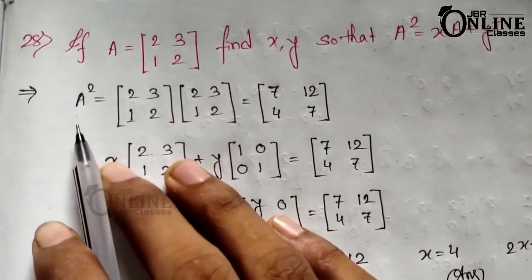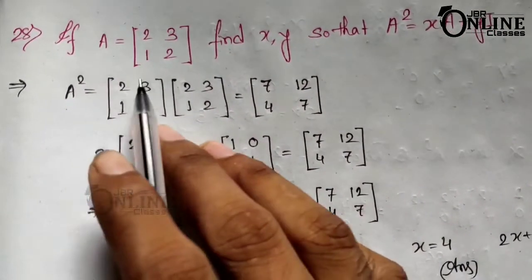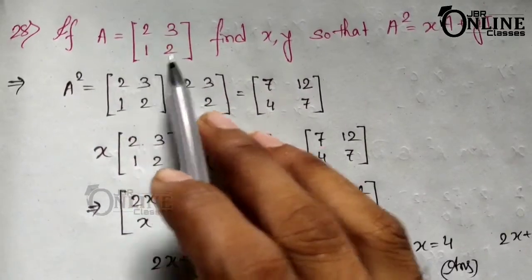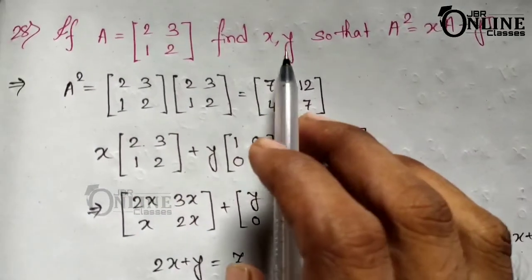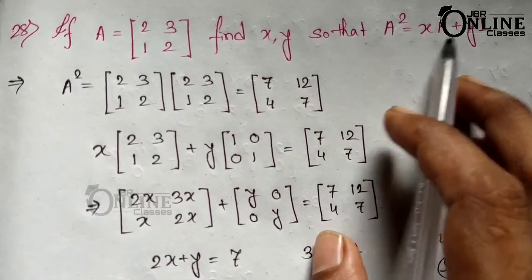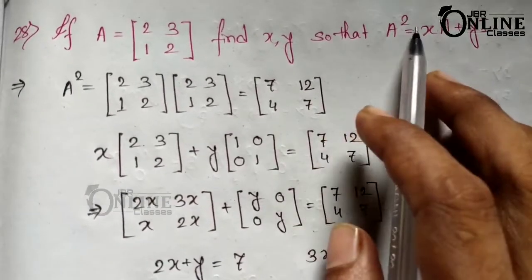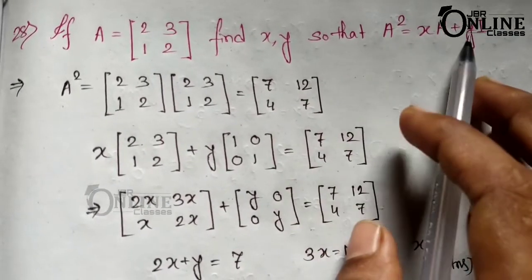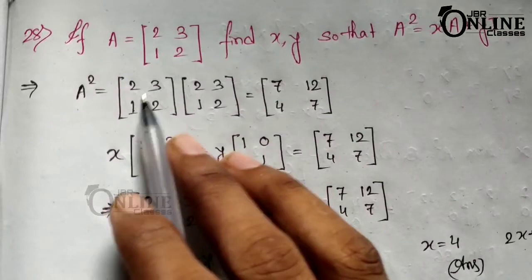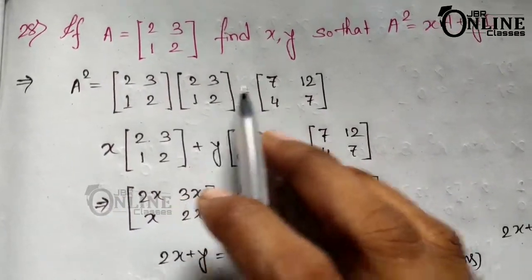Next, sum number 28. If A equals the matrix [2, 3; 1, 2], find x and y such that A² equals x times A plus y times I, where x and y are scalar elements. So A² equals [2, 3; 1, 2] multiplied by [2, 3; 1, 2].